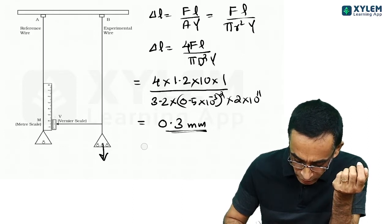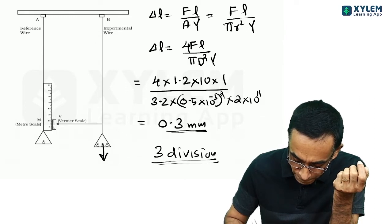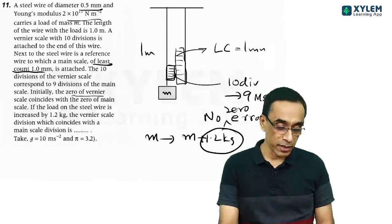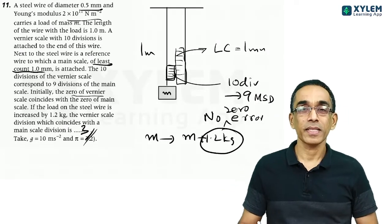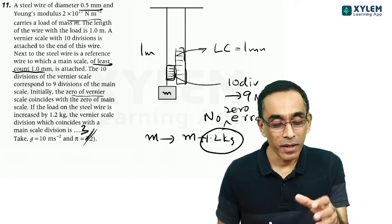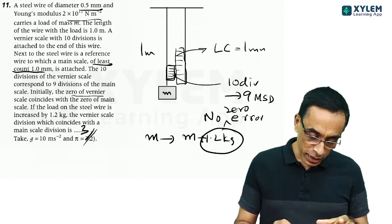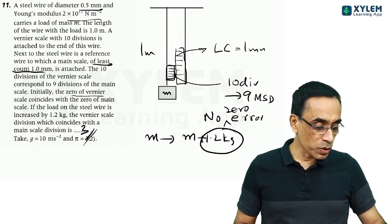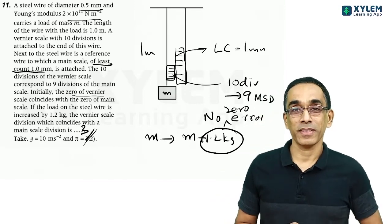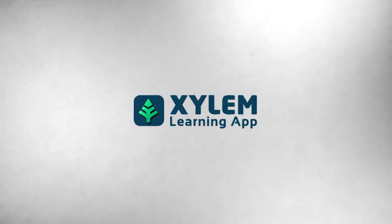Right. Now, for 0.3 millimeter, how many divisions should move on the vernier? That is what I ask you. The vernier scale division which coincides with the main scale division is the answer. So, you have a least count of 0.1 millimeter and you have a reading of 0.3 millimeter. This means it will have three divisions. One division is 0.1, so for 0.3 millimeter, you need three division reading. So the answer is three.